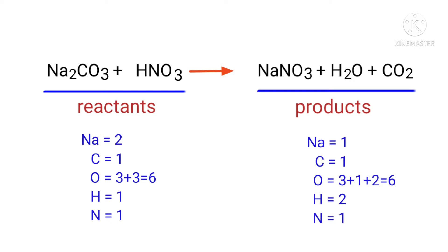On the products side, there is one sodium atom, one carbon atom, six oxygen atoms, two hydrogen atoms, and one nitrogen atom. The number of atoms are not balanced on both sides.